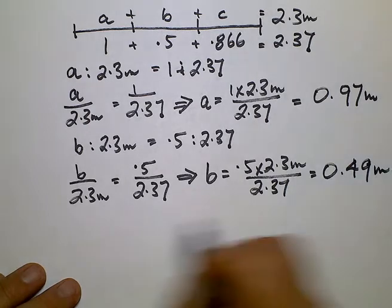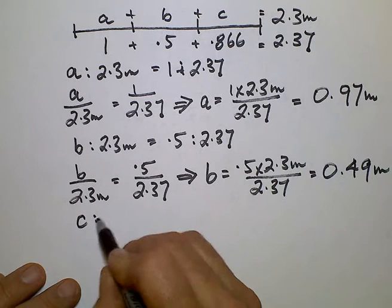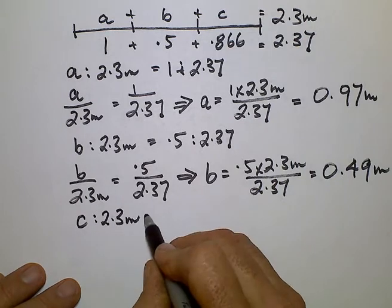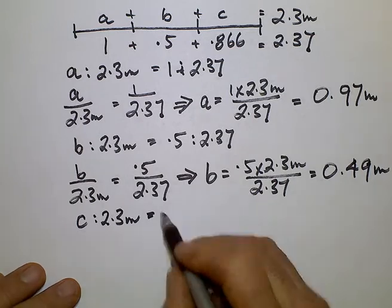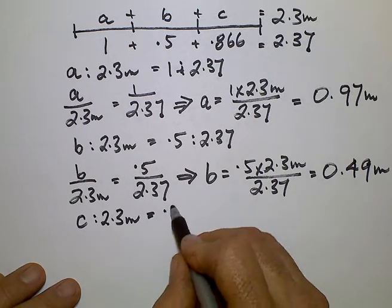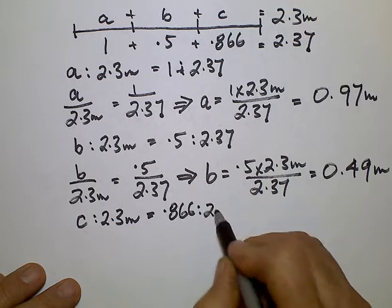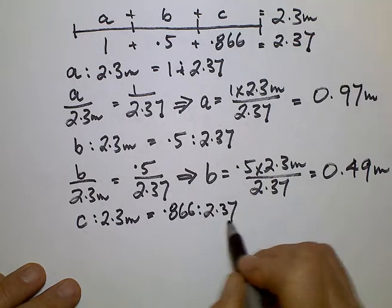We do the same to C. The proportion of C to the total is the same as saying 0.866 as a ratio of the total sum, and we can write that as C divided by 2.3 metres equals 0.866 divided by 2.37.